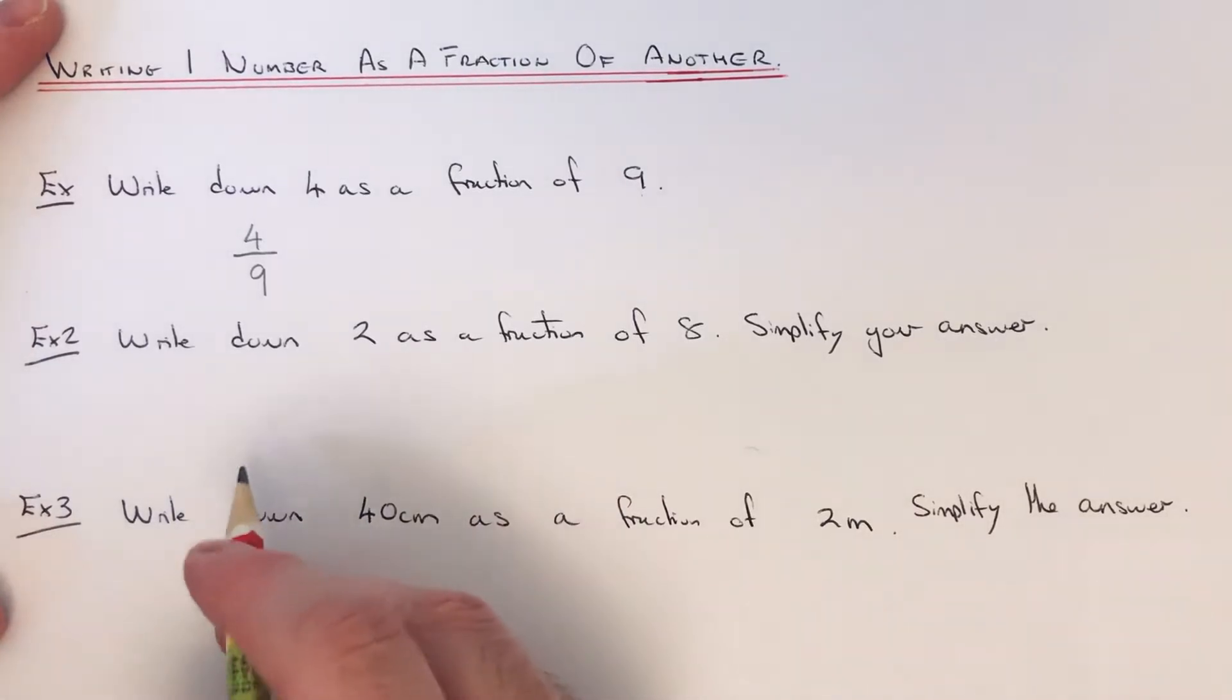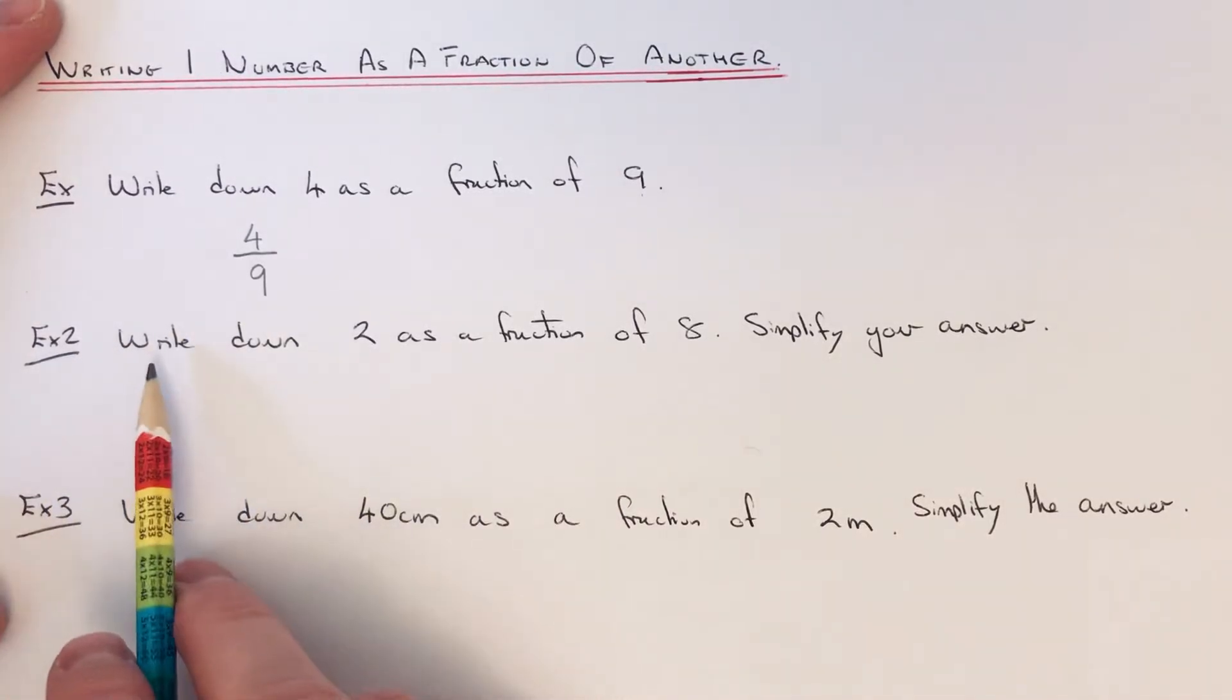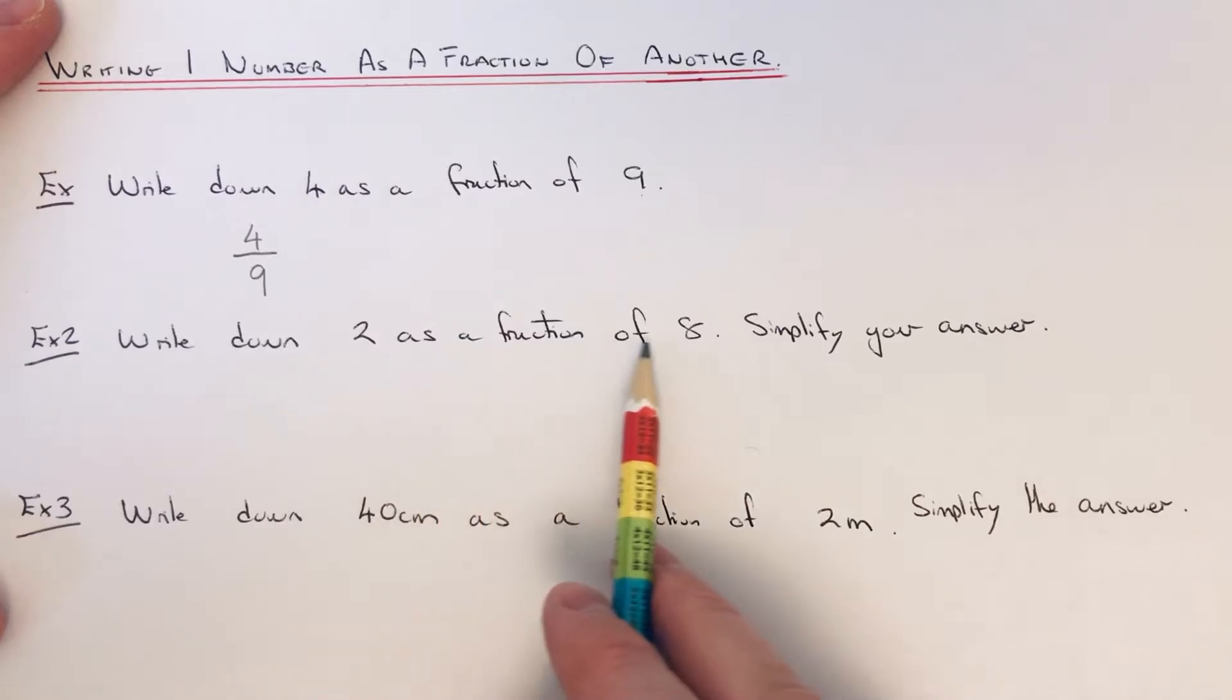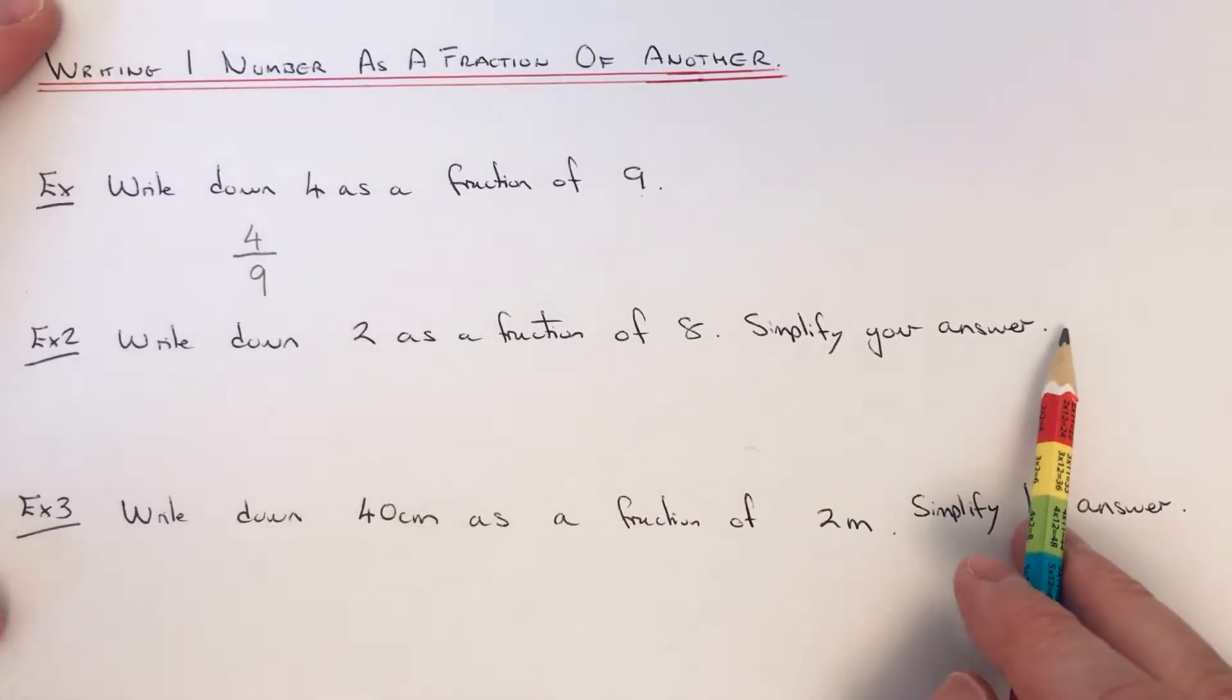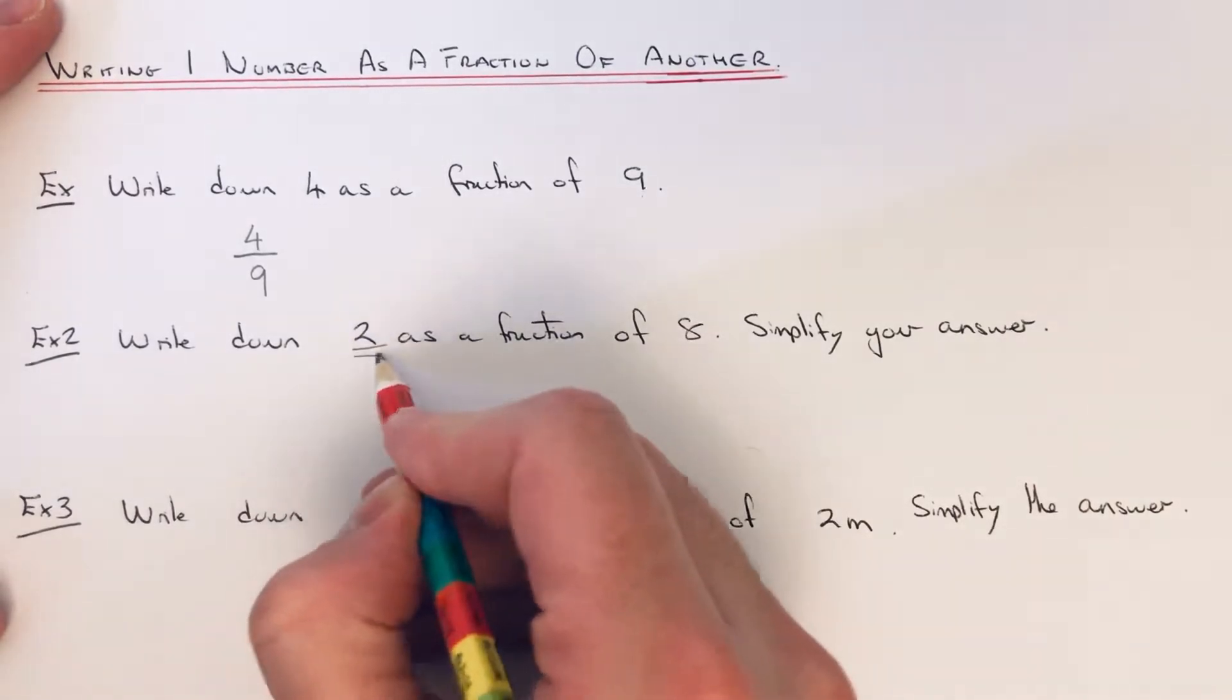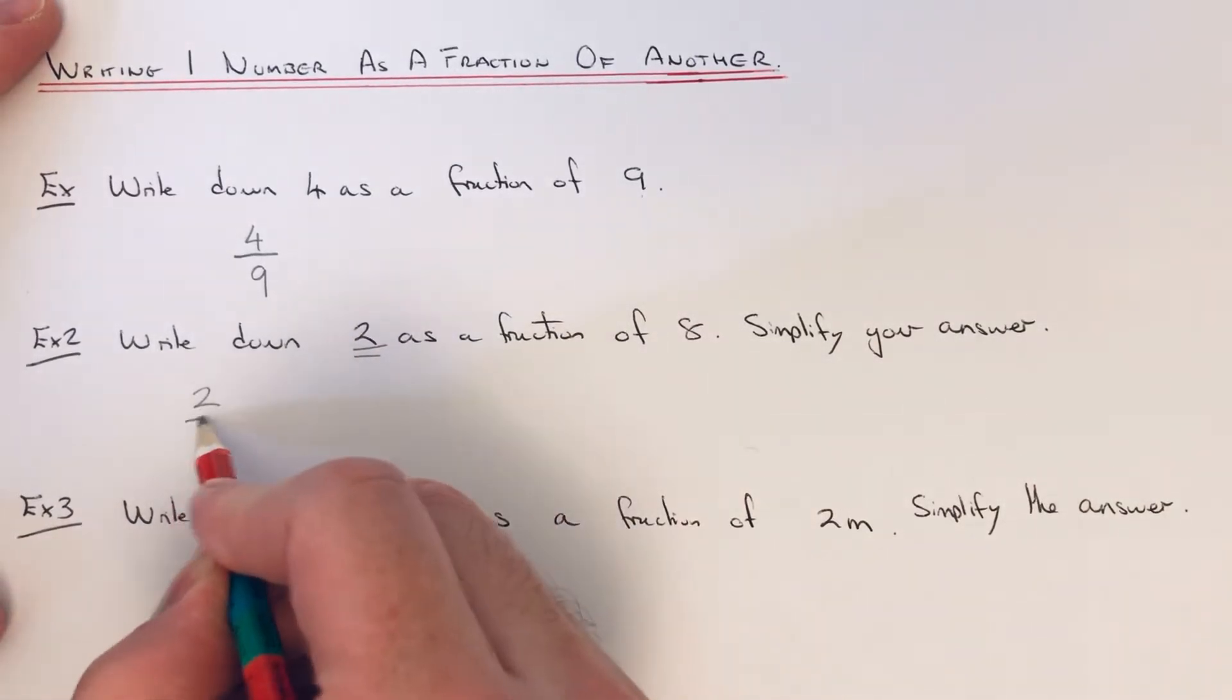Let's move on to example two. We've got to write down 2 as a fraction of 8, and you're also asked to simplify the answer. So if we put 2 on the numerator of our fraction and 8 goes on the denominator.